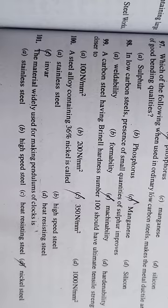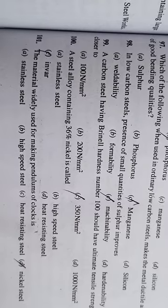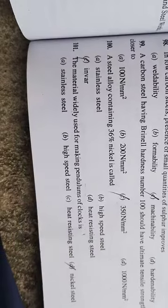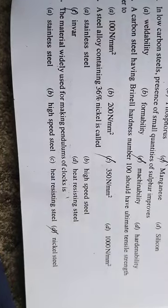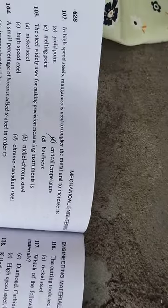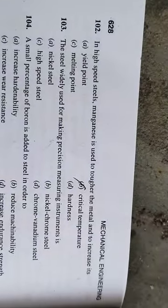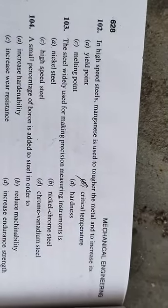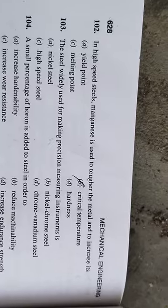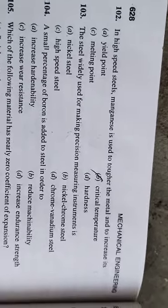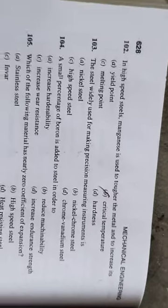A steel alloy containing 36% nickel is called Invar. Invar is the material widely used for making pendulums of clocks due to its low coefficient of thermal expansion. In high speed steel, manganese is used to toughen the metal and increase its critical temperature.